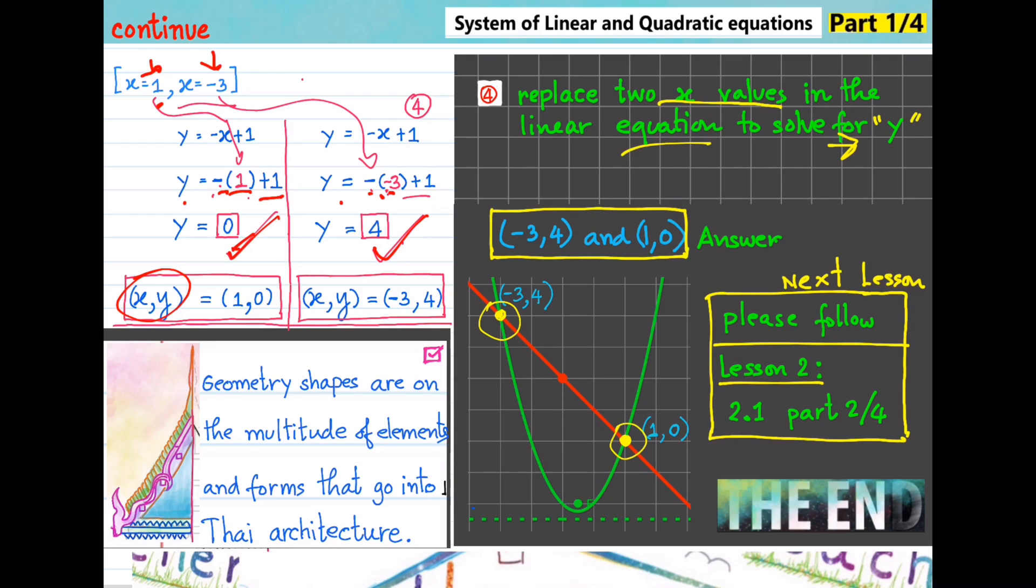Then we put it in the graph. We draw curve line here. We draw straight line here. Then we put the intercept as we see in the figure.